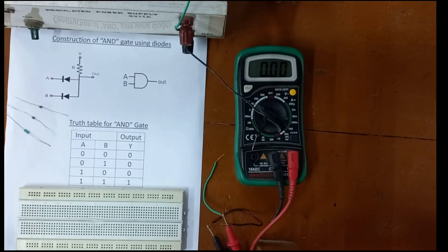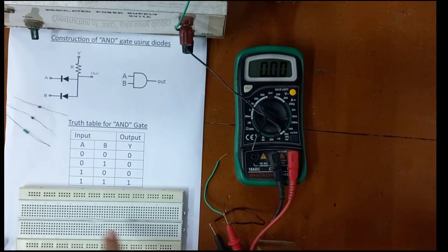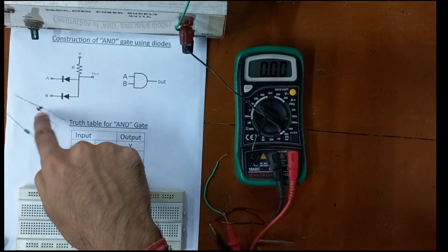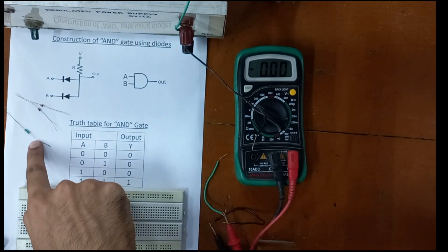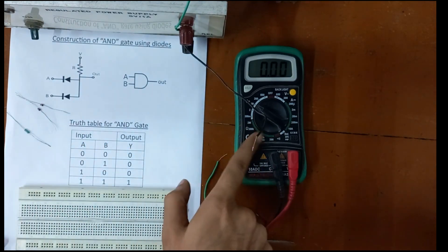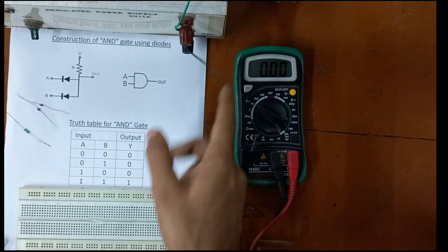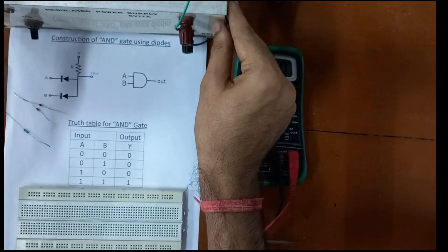In order to construct an AND gate using diodes, we need one breadboard, two diodes, one 1 kilohm resistance, one multimeter or voltmeter, and a 5 volt power supply.